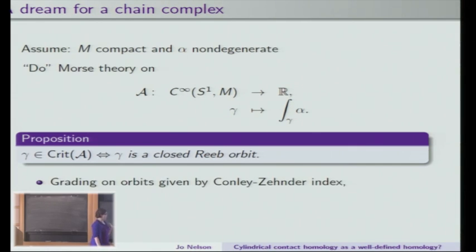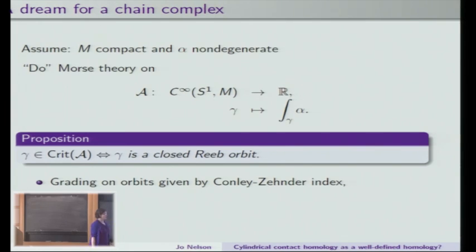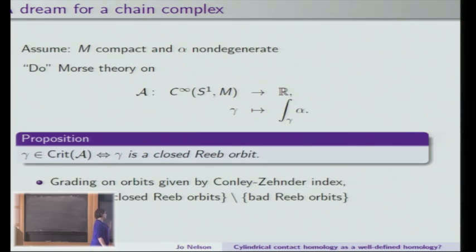The idea is to do Morse theory on this action functional — except we're not really going to be doing Morse theory, it's just the jumping-off point. You can check that the only critical points of this action functional are closed Reeb orbits associated to alpha, which is why you might want to try Morse theory. For the grading on the orbits, you can't compute the number of negative eigenvalues associated to the Hessian because there will be infinitely many. So we have something called the Conley-Zehnder index, which is like a winding number for arcs of symplectic matrices. The chain group C-star is going to be generated by all the closed non-degenerate Reeb orbits.